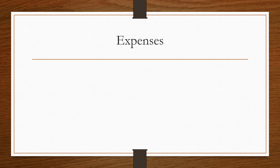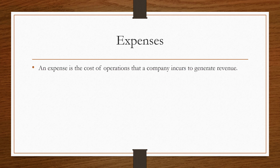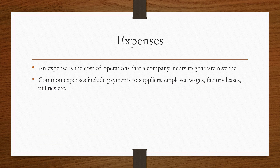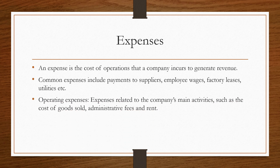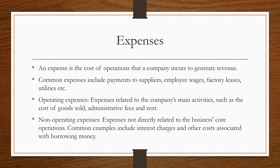Next, what are business expenses? An expense is the cost of operations that a company incurs to generate revenue. Common expenses include payments to suppliers, employee wages, factory leases, and utilities. There are two types: operating expenses, related to a company's main activities such as cost of goods, administrative fees, and rental; and non-operating expenses, which are not directly related to core business operations — common examples include interest charges and other borrowing costs.